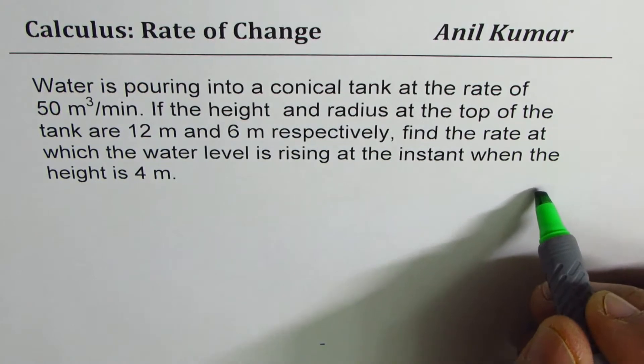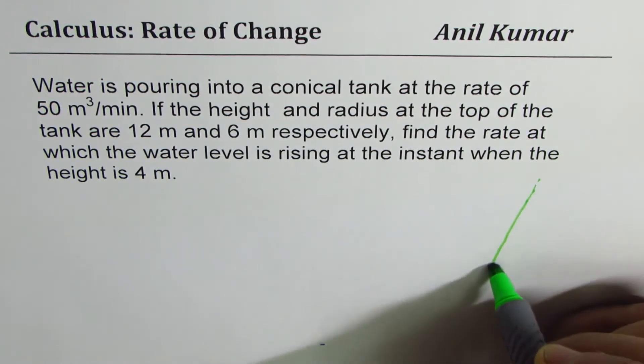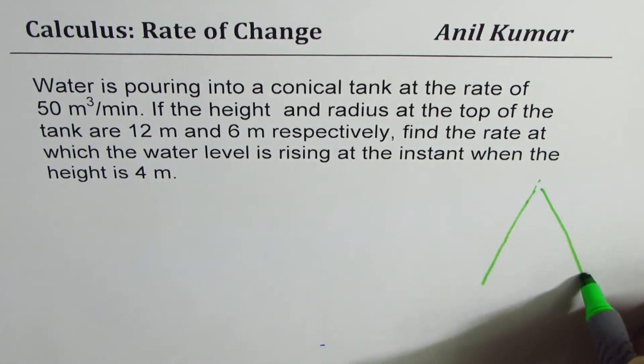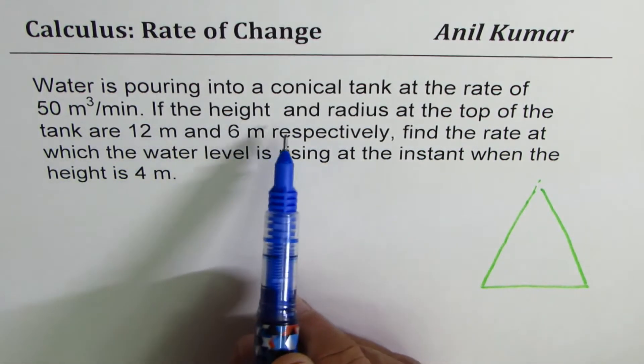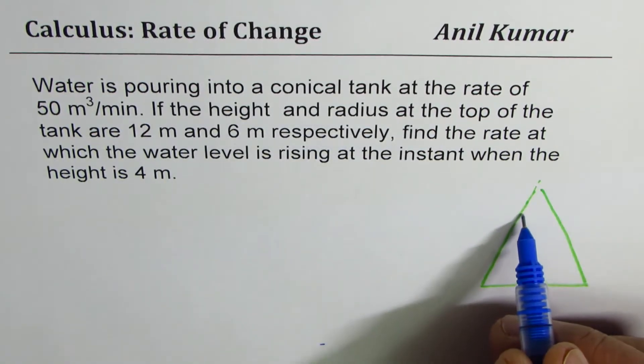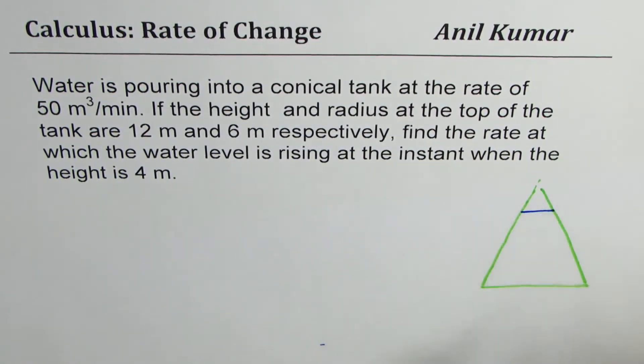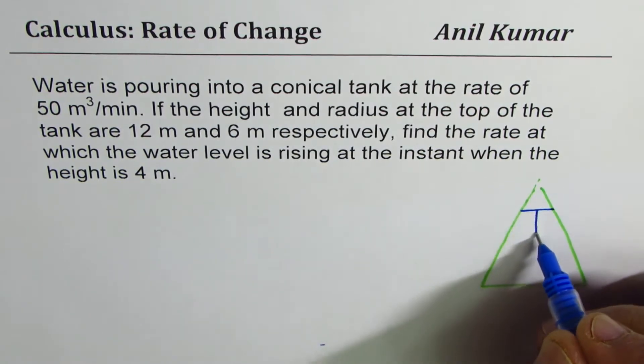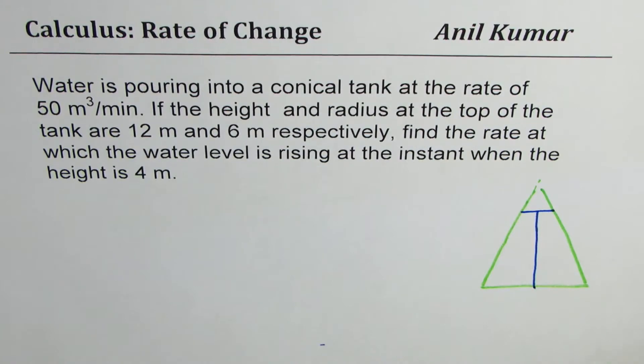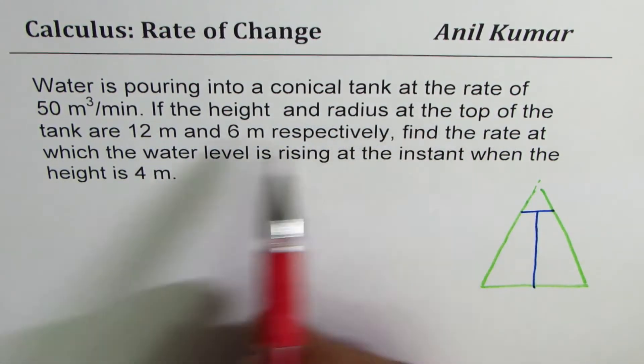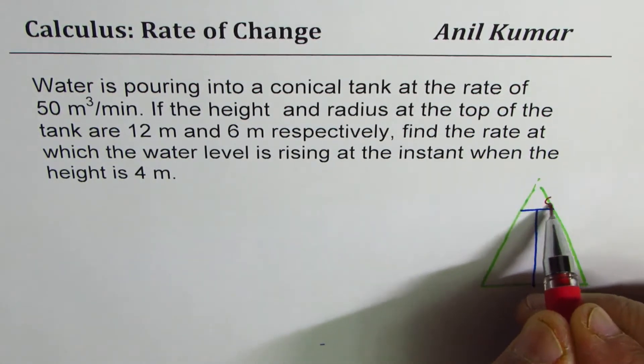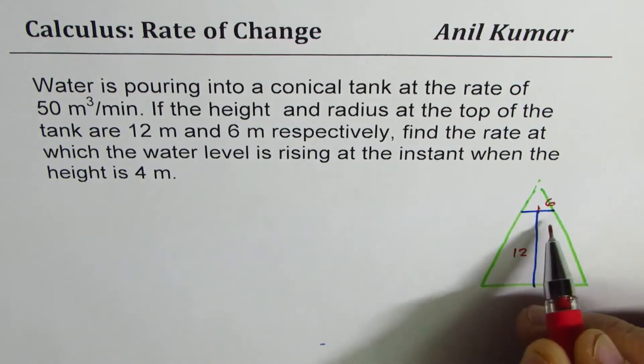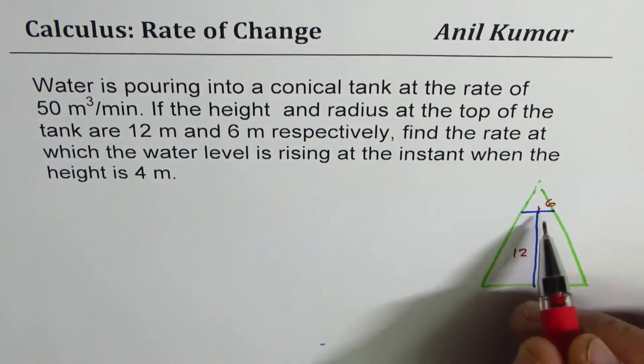So let's sketch the diagram. We'll just make a conical flask here. What we are given here is that the ratio of height and radius is given to us. At a particular point, the ratio of radius - it says if the height and the radius at the top of the tank are 12 meter and 6 meter, well this seems to be much smaller, but anyway, radius is 6 and this is 12. That is the ratio is 1 is to 2, somewhere at the top.